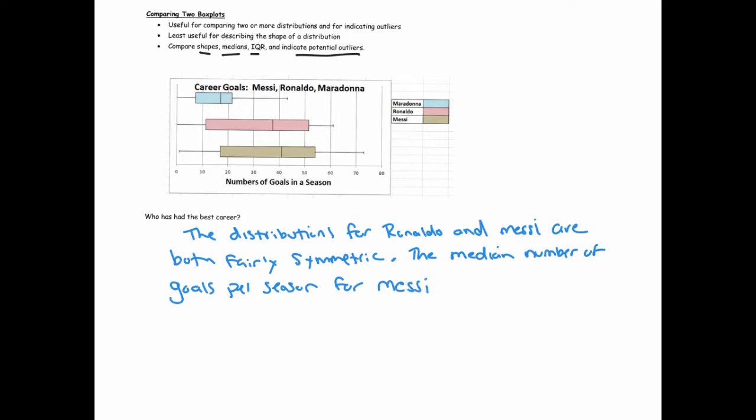And we can quantify this a little bit. It looks like his is about, let's say 42, 42 goals, and Ronaldo's is about like 37. So that's like a difference of five. I might say the median number of goals per season for Messi is about five more than that of Ronaldo.